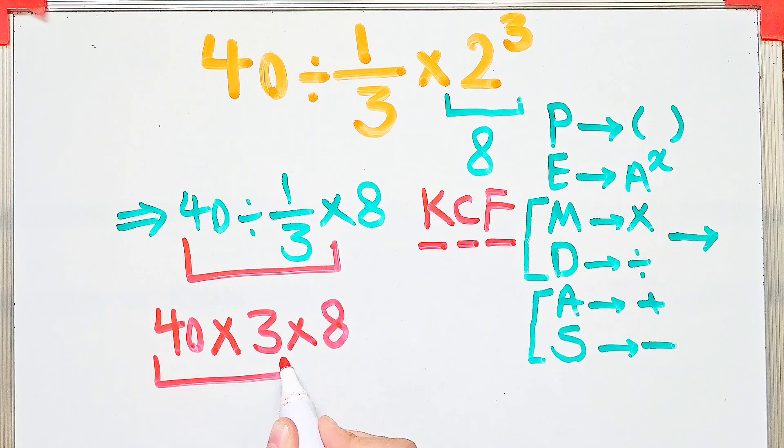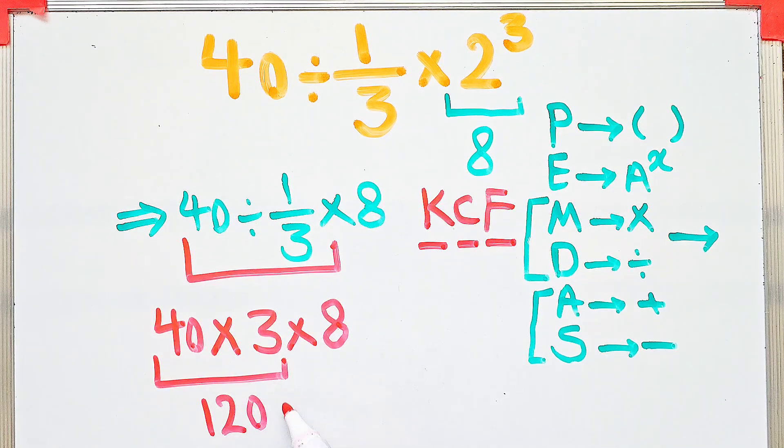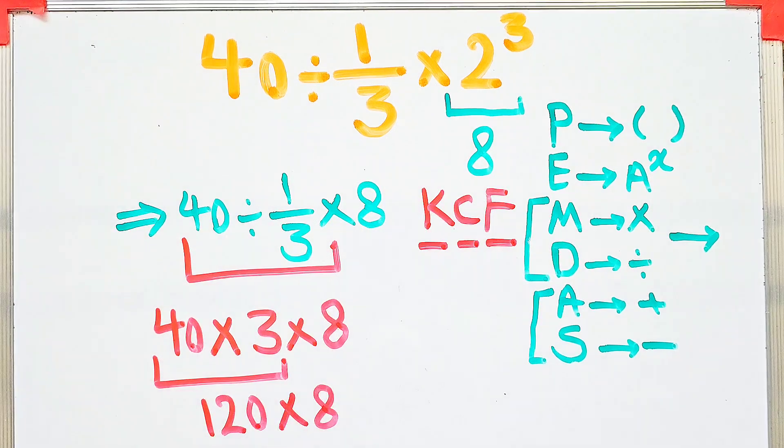40 times 3 equals 120, and 120 times 8 equals 960. The final answer is 960.